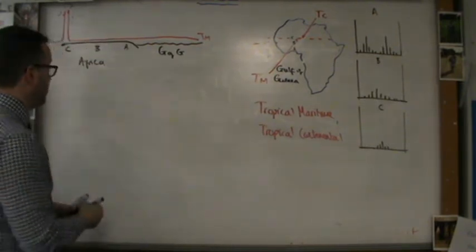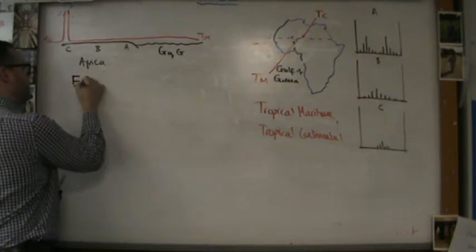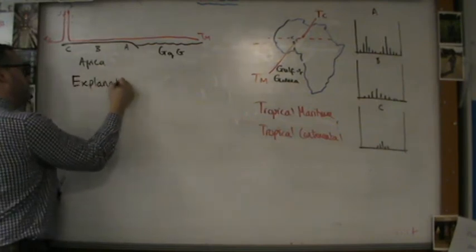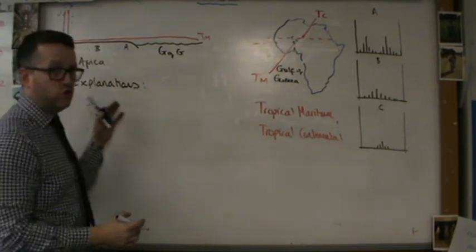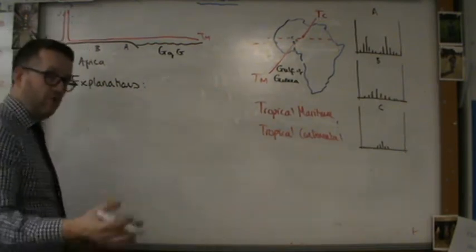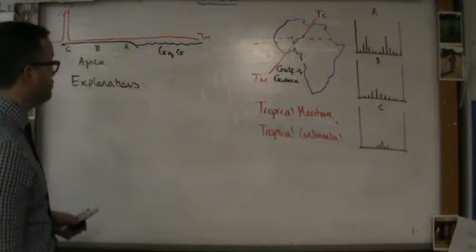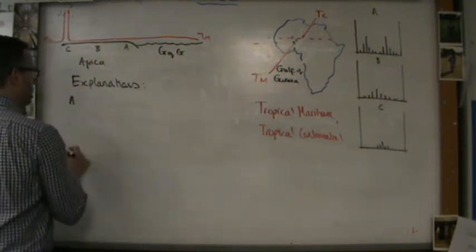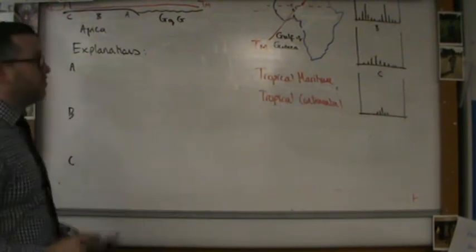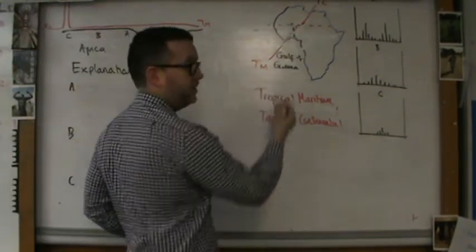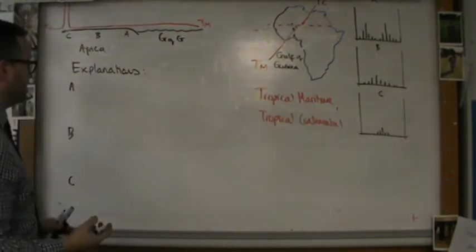On to explanations. I should have pointed out there, if you want to get that note on descriptions, just rewind the video and pause it. You can copy it down. For the explanations, we break our explanations down into A, B, and C. Remember A, B, and C would actually have African place names in the event of the exam.